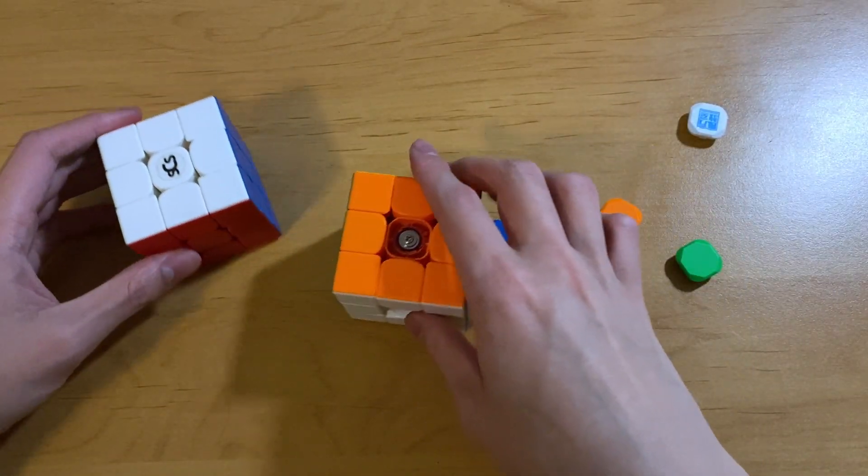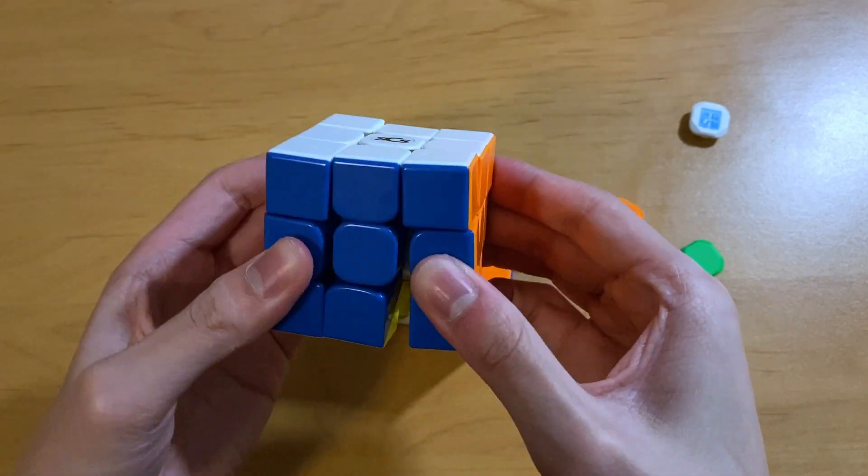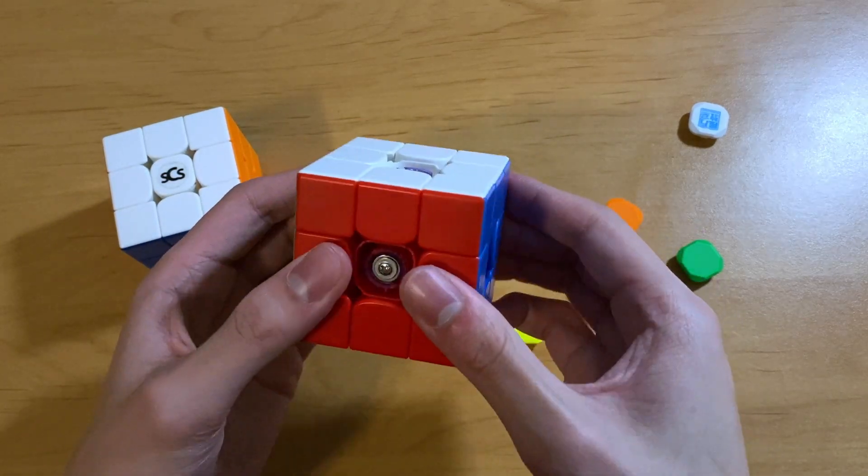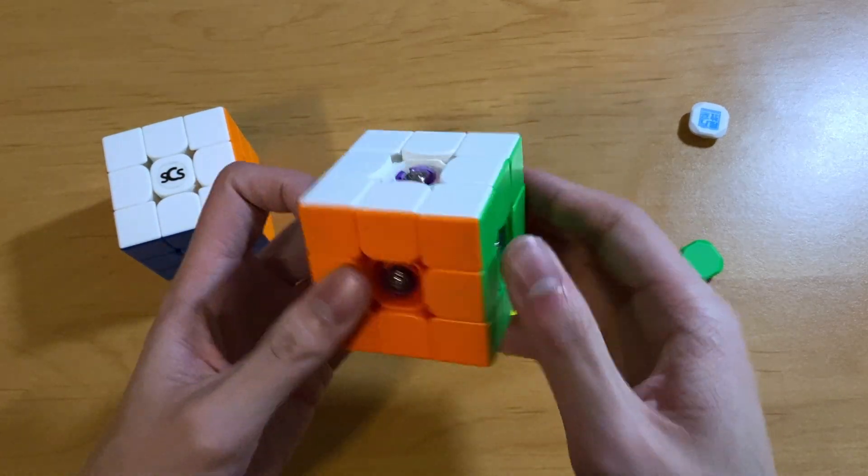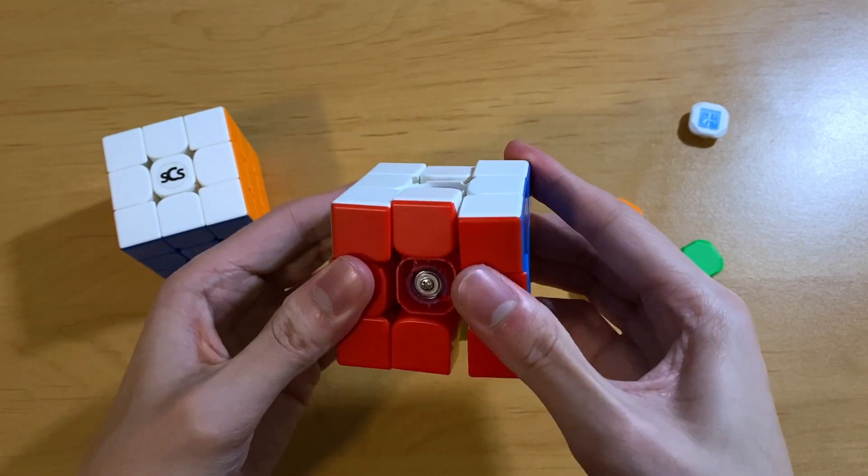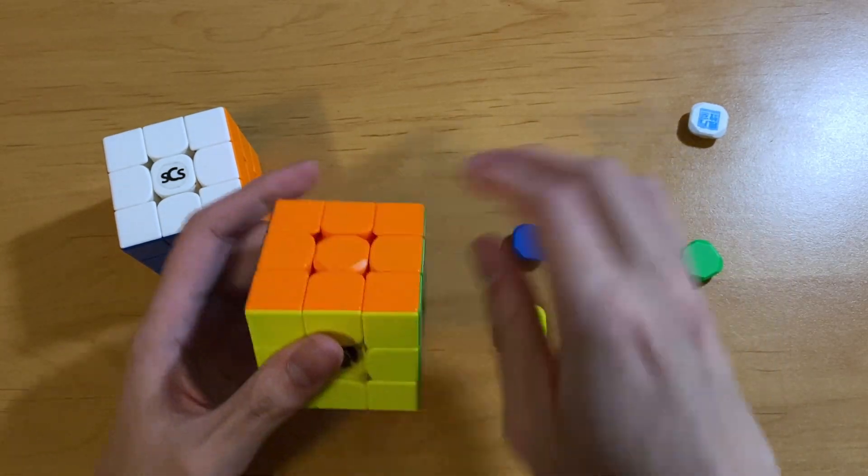And I'm also gonna try getting the tensions to be the same. My RS3M is tensioned like this. My RS3M 21—these have the same name, it's kind of annoying. This is my Super RS3M. I think they're about the same. I'm just gonna leave it how it is for now and do fine tune adjustments later if I need to.